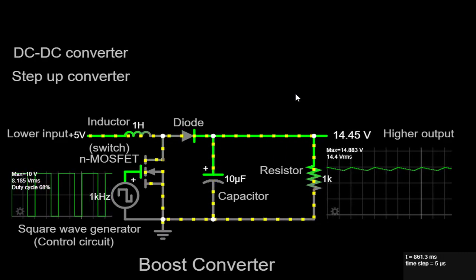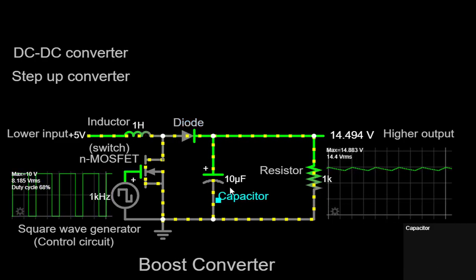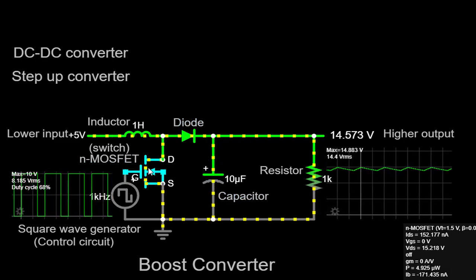The basic components of a boost converter include an inductor, a diode, a capacitor, a switch, usually a transistor, and a control circuit.